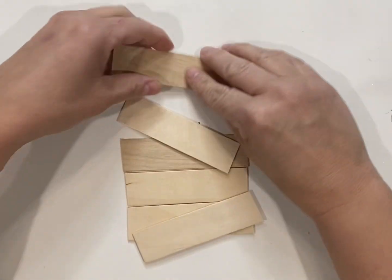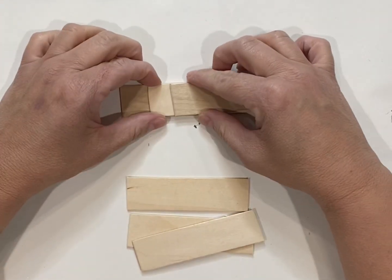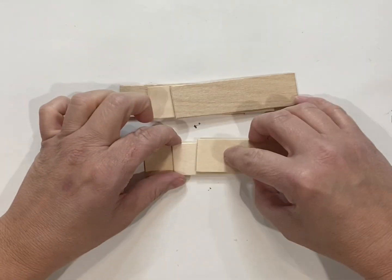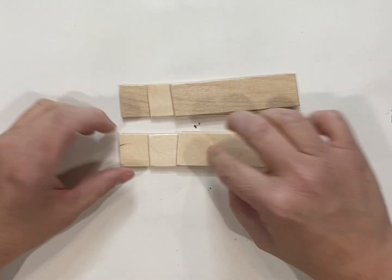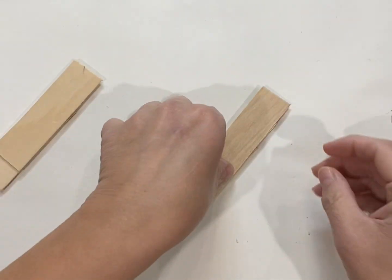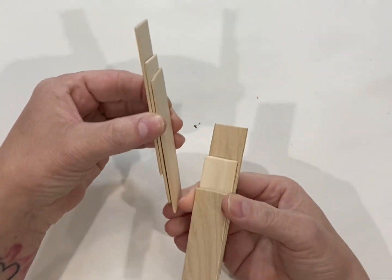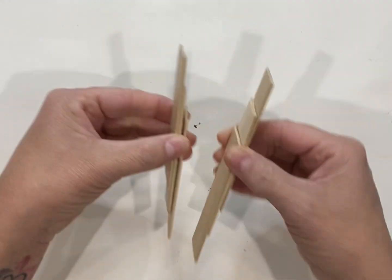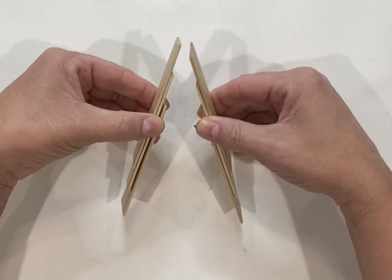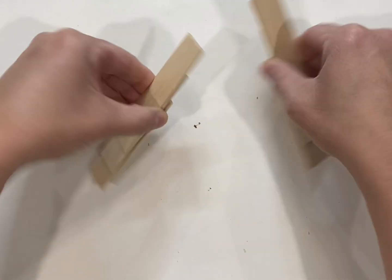Now I'm gonna lay them out and offset them maybe an inch, half inch, something like that, so it looks the same on both sets. You need two sets of three, and these are gonna be each side of your miniature little shim tree. I'm just making sure I got them offset and it's gonna look right.